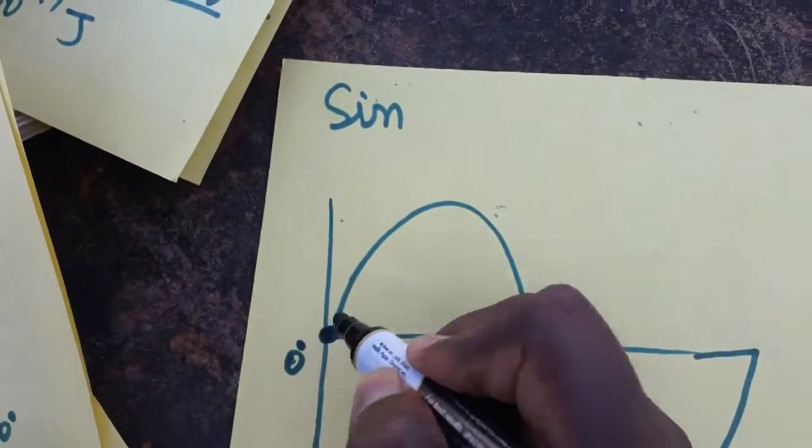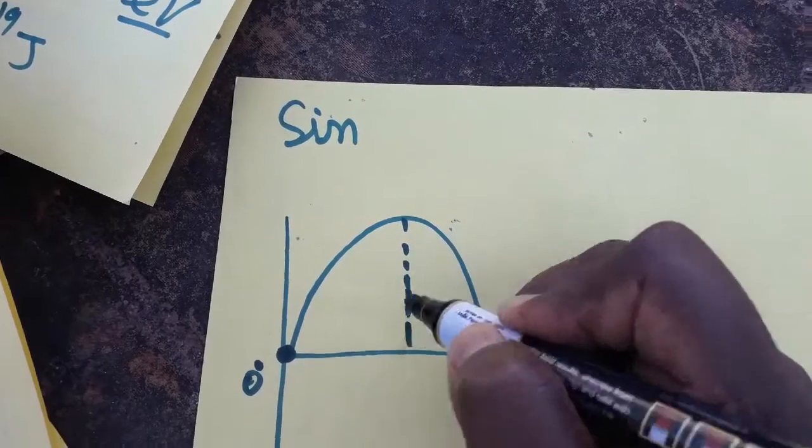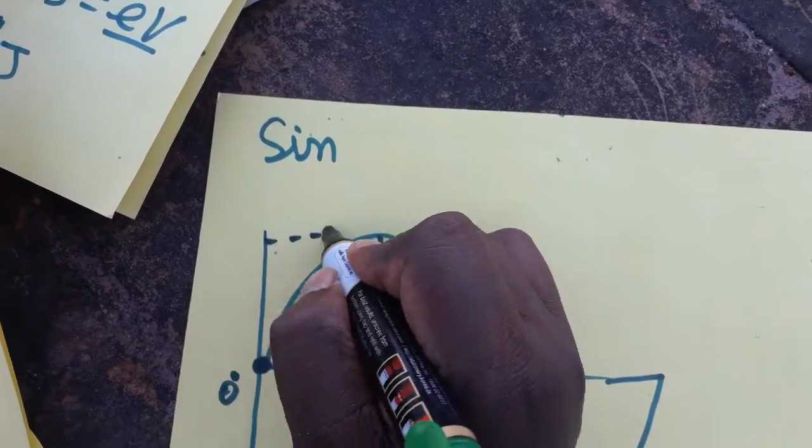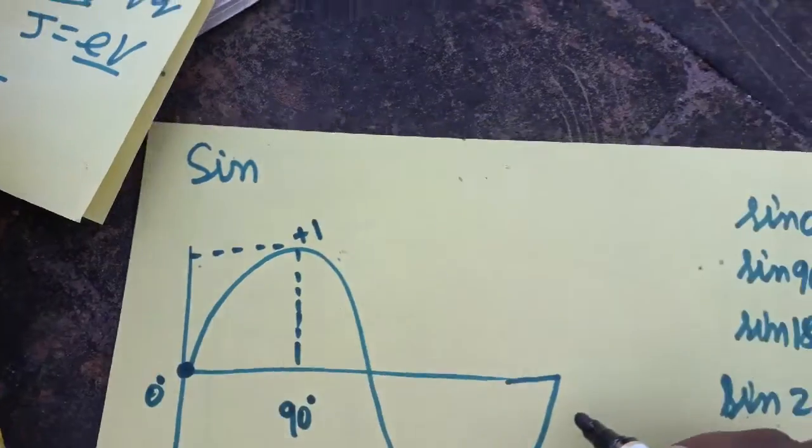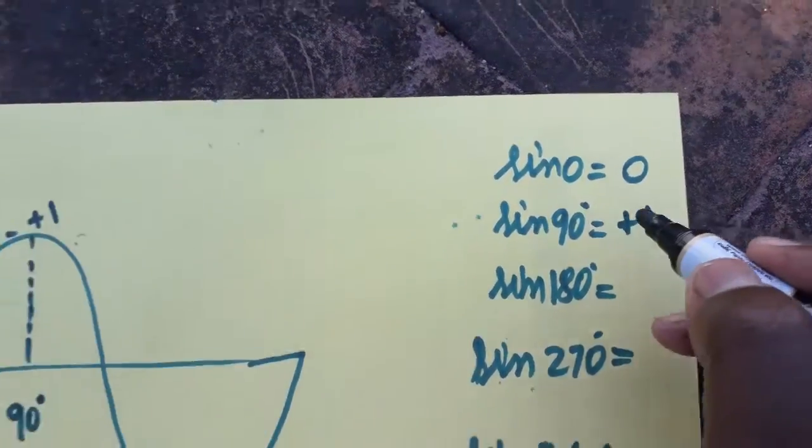This is 90 degree. The graph will be above the origin, it is called plus 1, so that means sin 90 will be plus 1. And this is the point, it is 180 degree, so the graph came to 0.